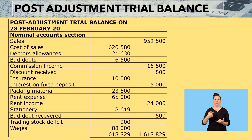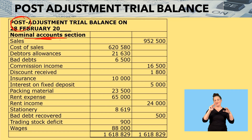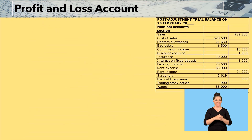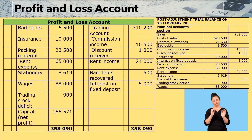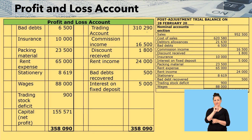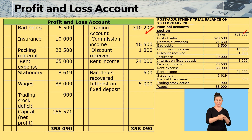We are given a post-adjustment trial balance and what we are looking at is the nominal account section, because when we prepare a trading account we will focus on the nominal accounts section. Earlier on we prepared a trading account and we had gross profit which was $310,290. We used sales, cost of sales, and debtors allowances, so those three amounts have already been used.